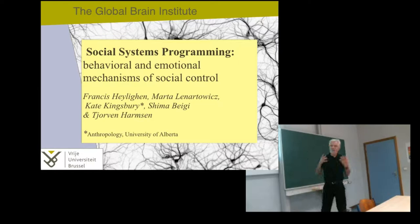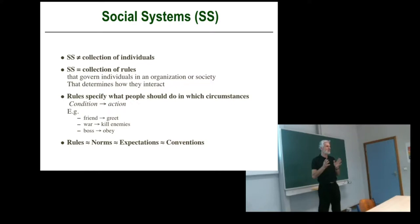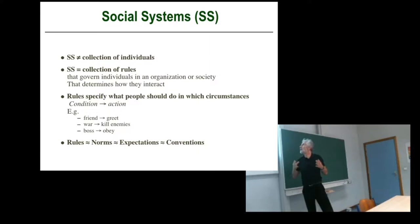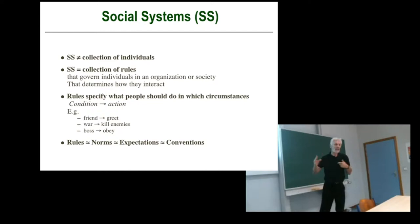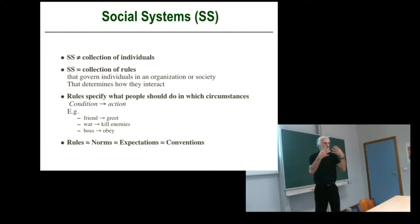Social systems programming — it sounds kind of mysterious. Let me try to explain first what social systems are. Note that we used in the beginning the abbreviation SS, but then in the paper we decided to take it out because it had too many negative connotations. Still, I think that abbreviation is useful, and even a negative connotation is useful because we use it in a kind of negative sense. A social system is not, as people might think, just a collection of human individuals. A social system does not consist of people.